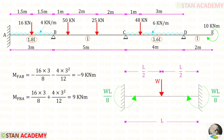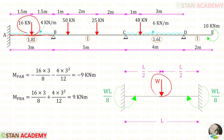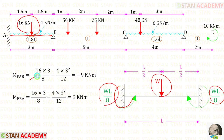Now we are going to find the fixed end moments. First, let us take the span AB and consider the point load, which is acting at the center. If the point load is acting at the center, the formulas to find the fixed end moments are WL/8 and WL/8. On the left side, the fixed end moment will be acting in the anti-clockwise direction, so it will be negative.